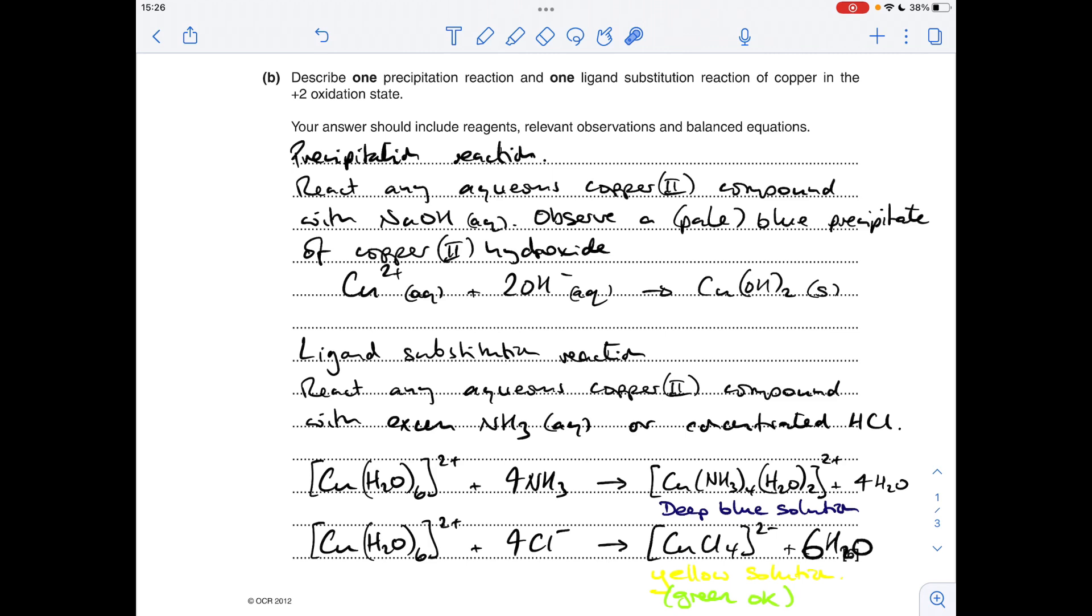But this simplified equation is absolutely fine. So moving on to the ligand substitution reaction now, there's a couple of options you could give, but you need to react any aqueous copper 2 compound, because it's going to give you this ion here, with either an excess of aqueous ammonia, or you could react it with concentrated hydrochloric acid. So the excess ammonia equation looks like that. So what would you observe? This is a pale blue solution, and it'd go to a deep blue solution.